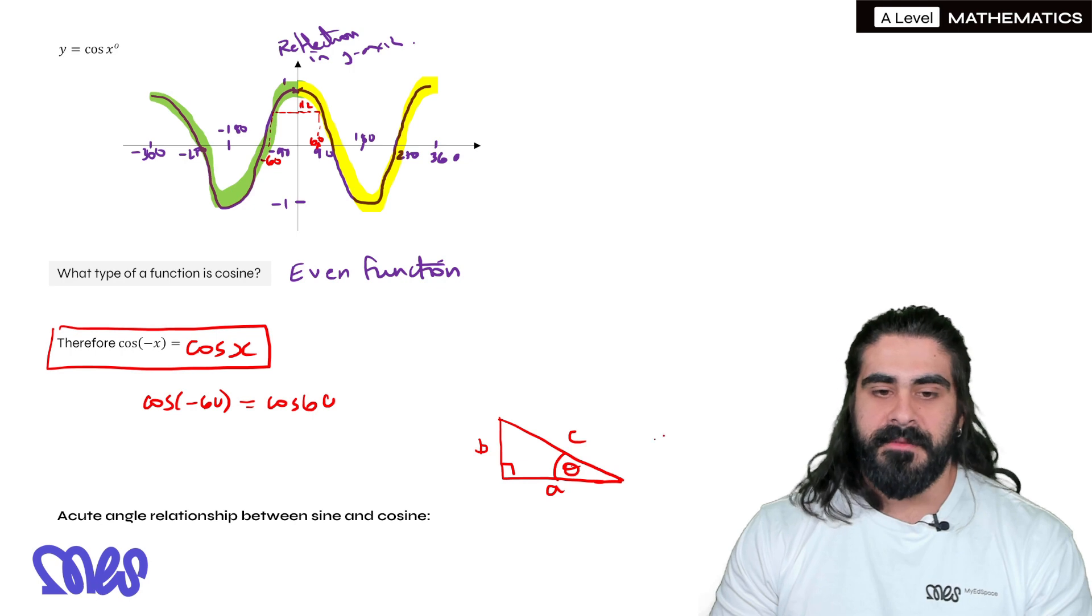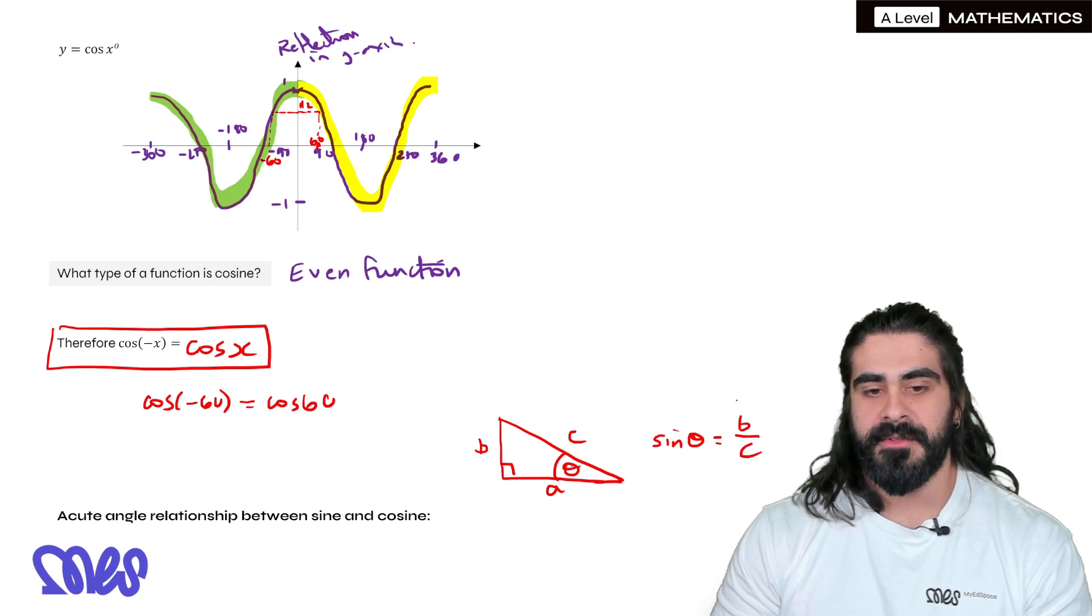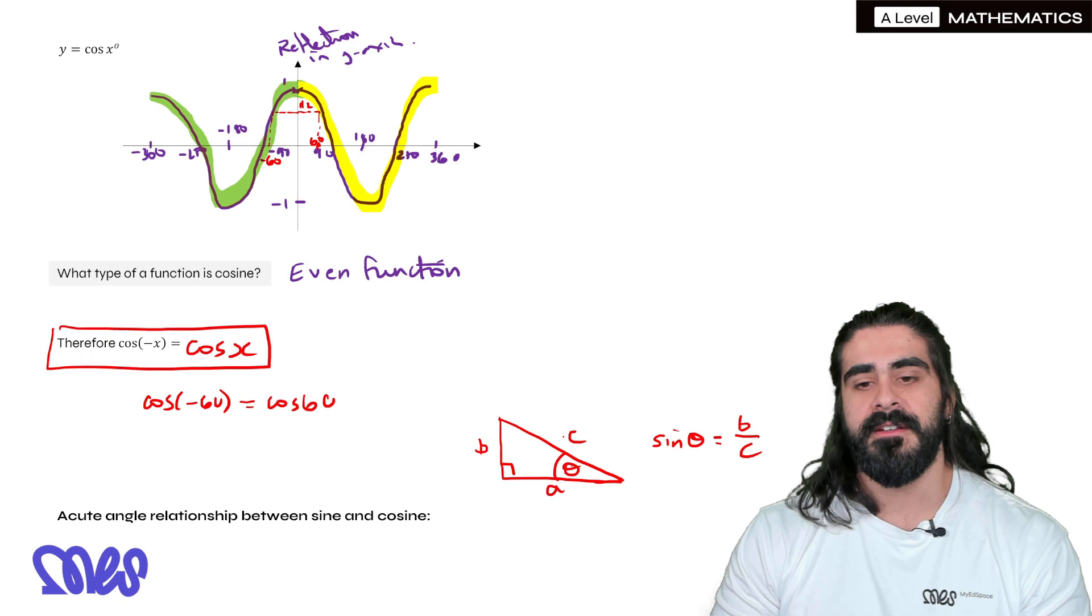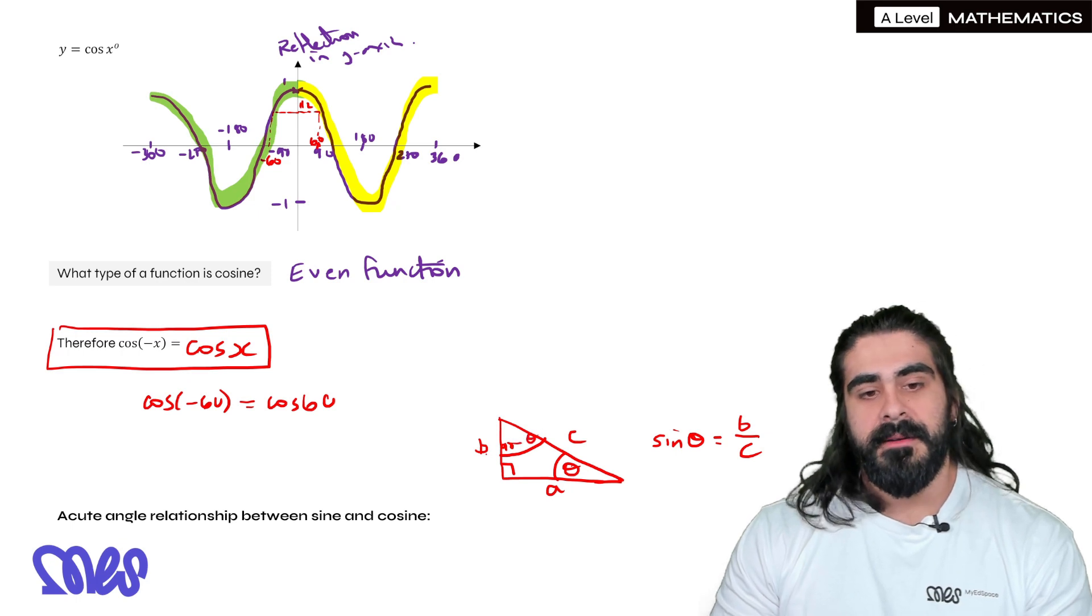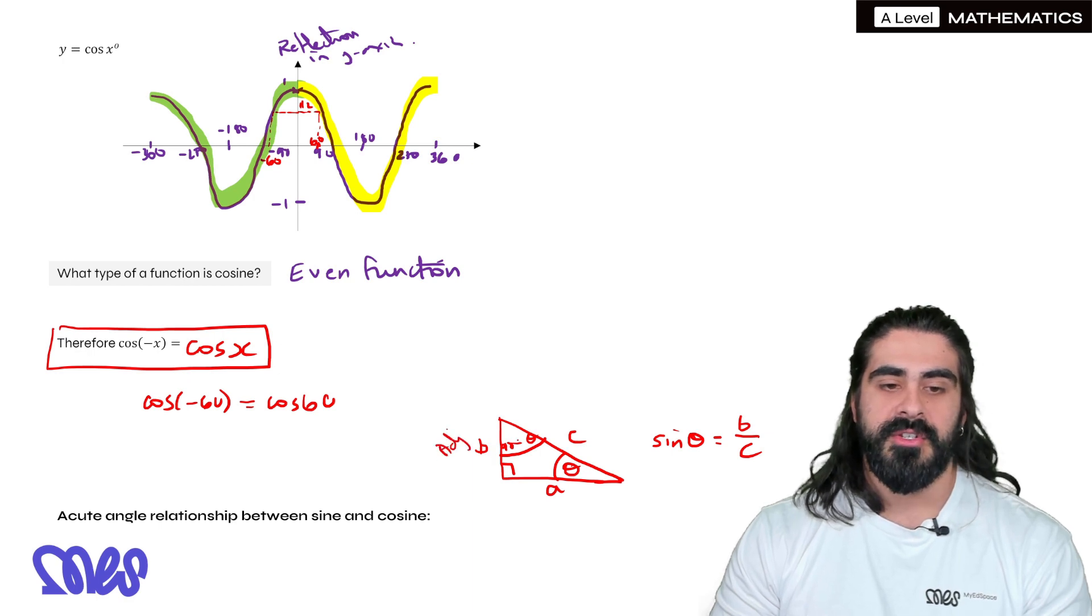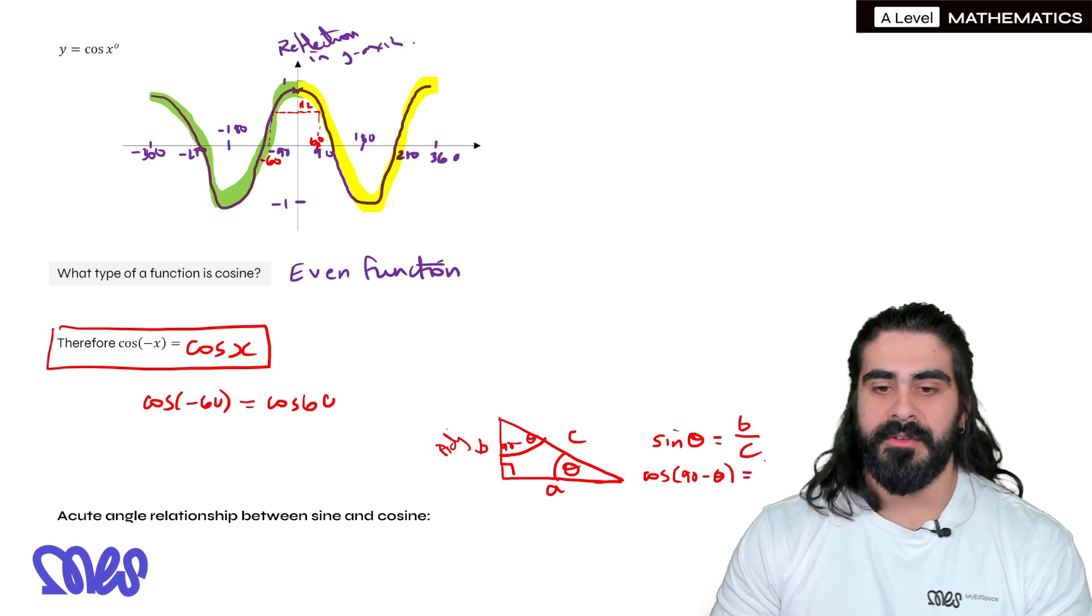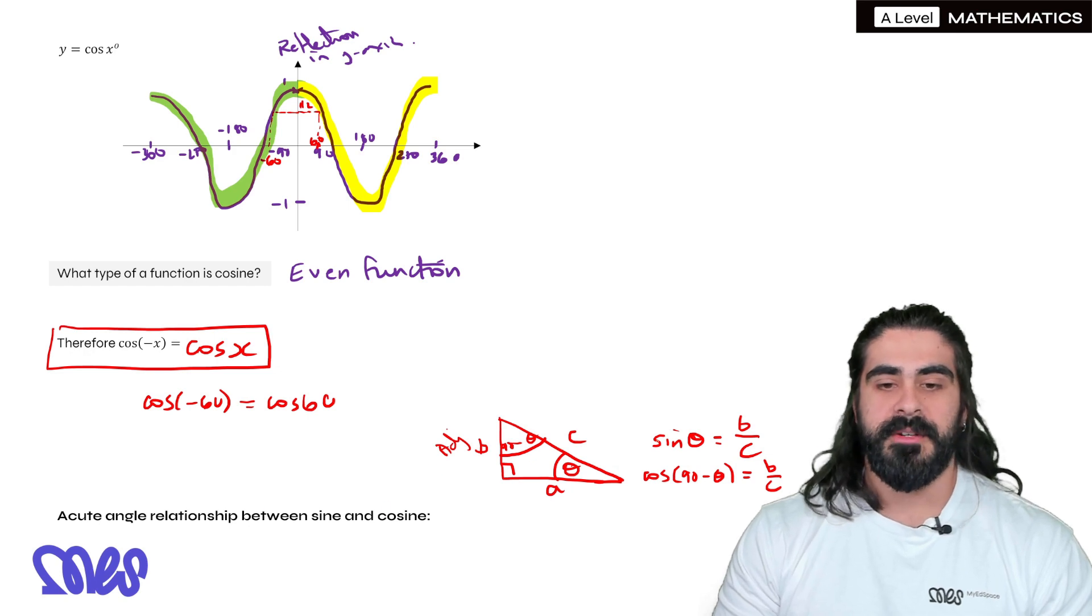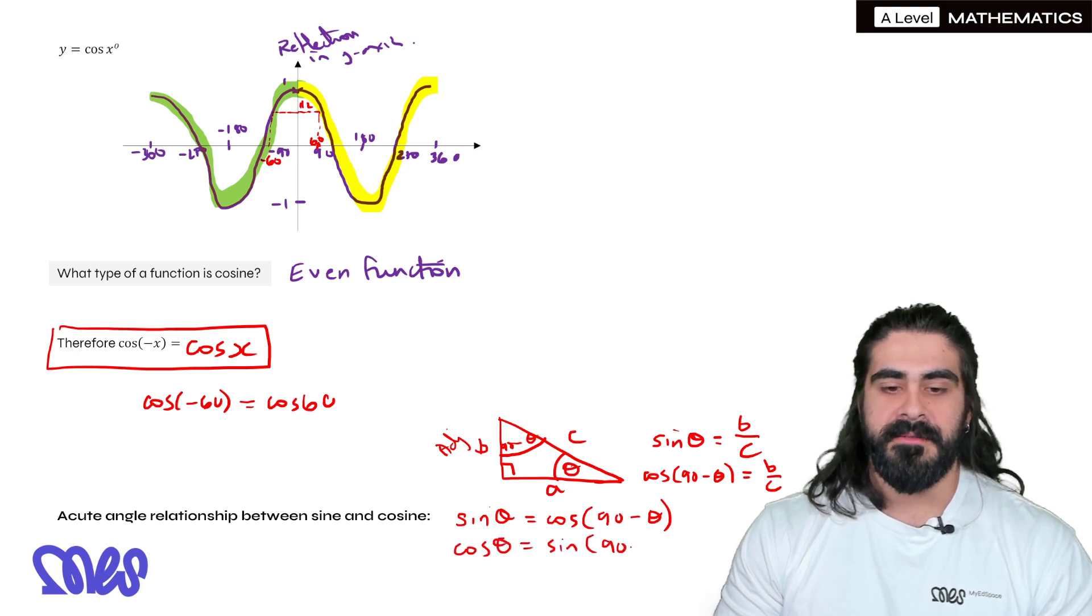Sine of theta, if I did sine of theta here, I'd get b over c, the opposite over the hypotenuse. Now, I could have done b over c in a different way. If I use this angle here, if this is theta, this would be 90 minus theta. b over c would be cosine of this angle, because b is now the adjacent to 90 minus theta. So cosine of 90 minus theta is also b over c, which leads us to our relationship between sine and cos. Sine theta is the exact same as cos of 90 minus theta, and you can do it vice versa. Cos theta is the same as sine of 90 minus theta.